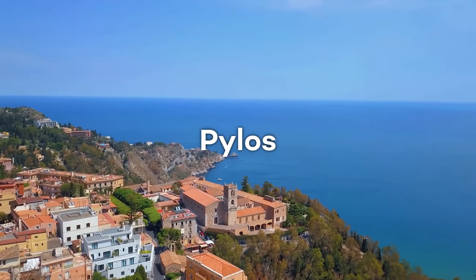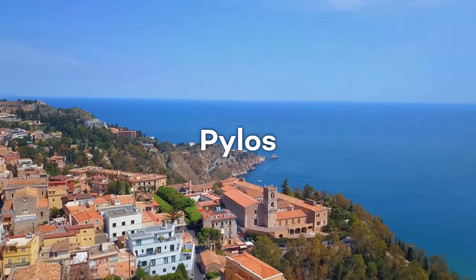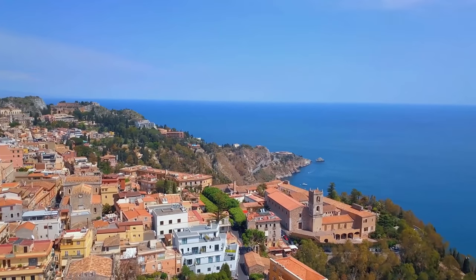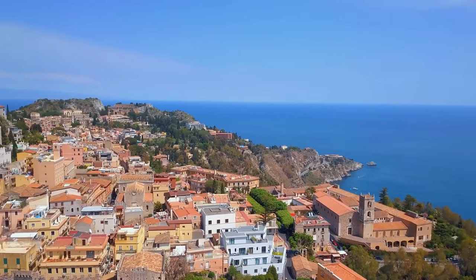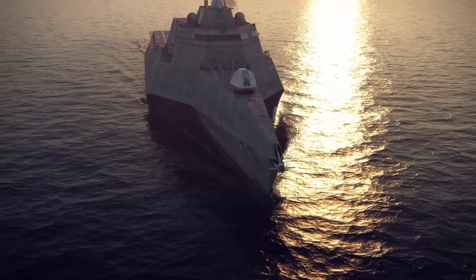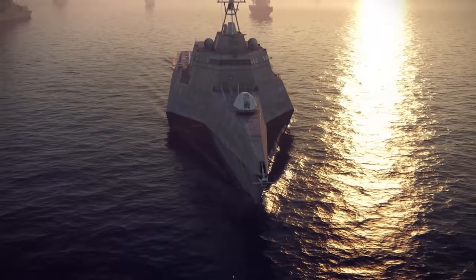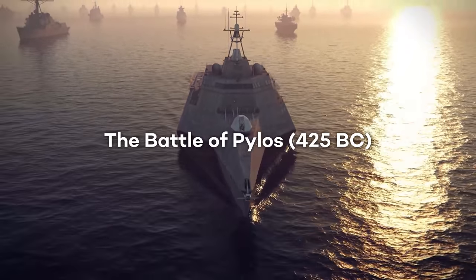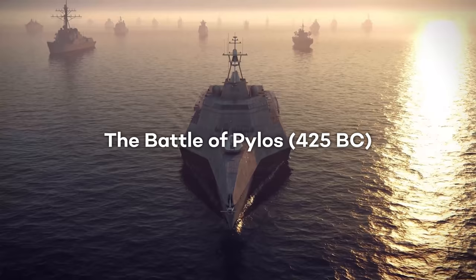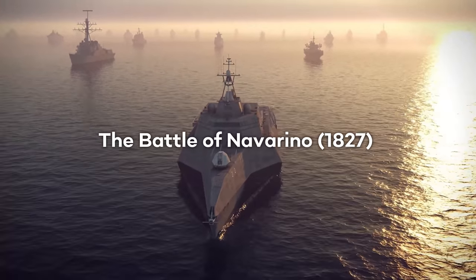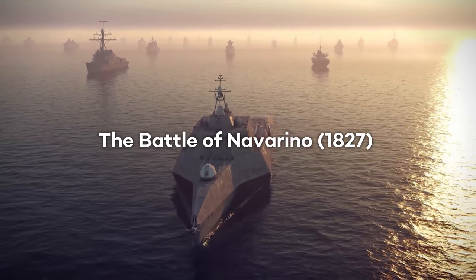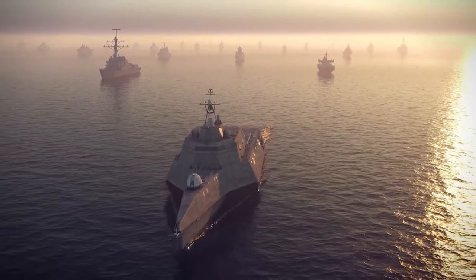Pylos is a Greek town of 55,000 inhabitants according to the 2001 census data. It is historically known for having been the scene of two naval battles: the Battle of Pylos during the Peloponnesian War and the Battle of Navarino, an episode of the Greek War of Independence.